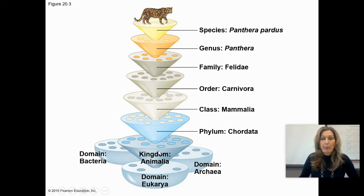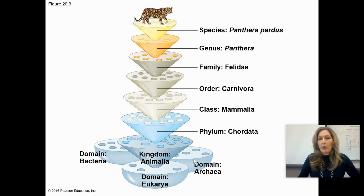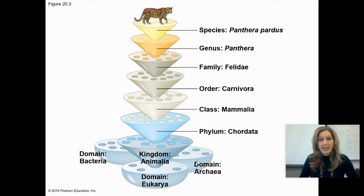Through molecular evidence, we realize that prokaryotes are quite different from each other. We actually have Domain Bacteria and Domain Archaea, which branched and separated very early on. Domain Eukarya and Domain Archaea actually share a more recent common ancestor than Domain Bacteria and Archaea do. The old five-kingdom system had the Kingdom Monera as a dumping ground for all prokaryotes. As we gain more evidence, we alter our hypotheses. We first classify an organism based on domain.